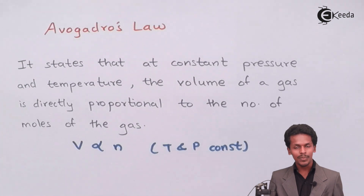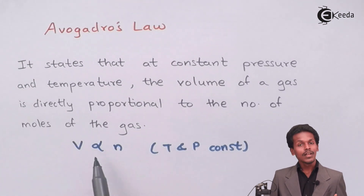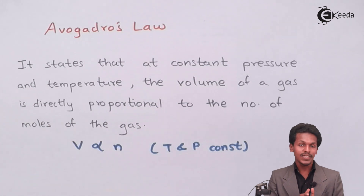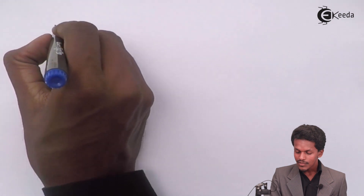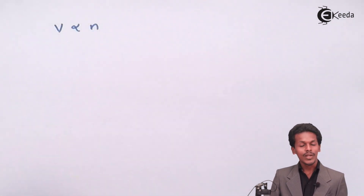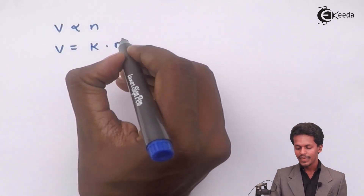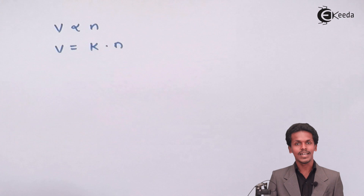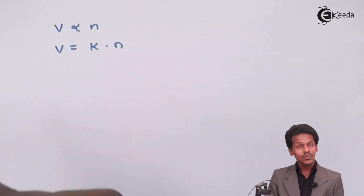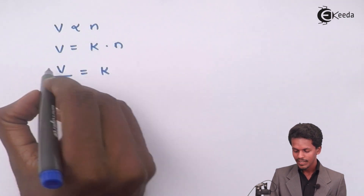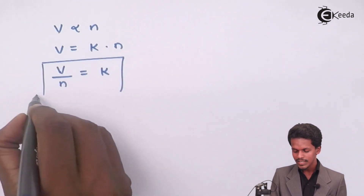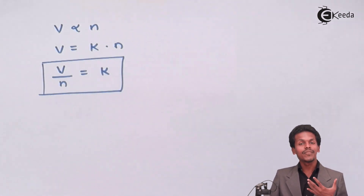This condition would be different for different gaseous states of the same gas but of different volumes or different number of moles. Since volume is directly proportional to n, I can write this as V = K × n, where K is the proportionality constant — similar to what we studied in Boyle's Law, Charles' Law, and Gay-Lussac's Law. So V divided by n equals K.